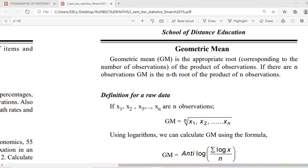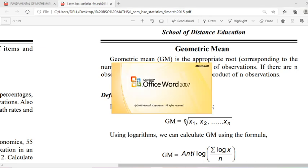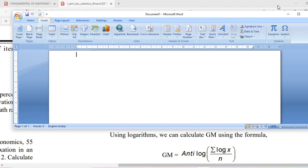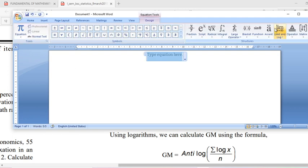It is not comma but it should be actually product. In this book it is given as comma, not it is not comma, it is actually product. Suppose you are given n number of observations.